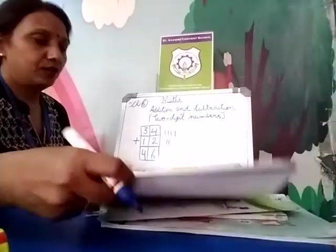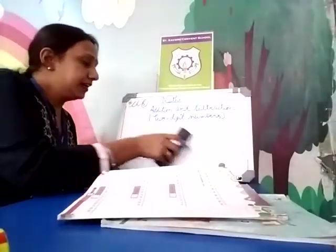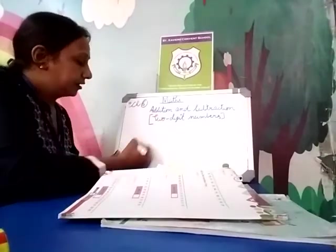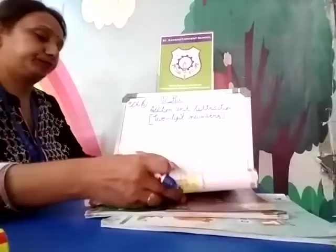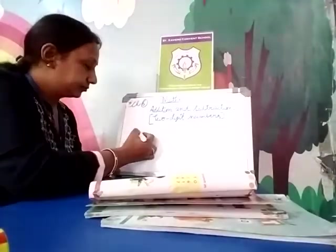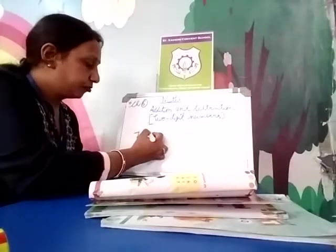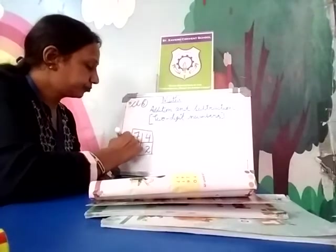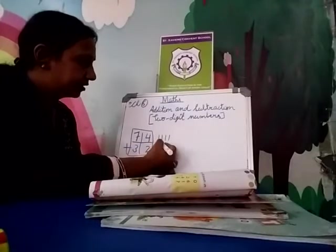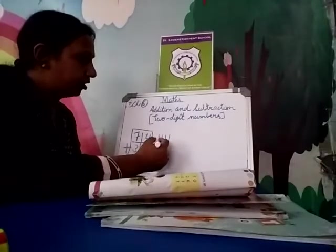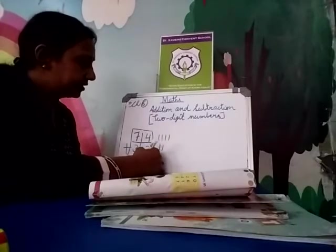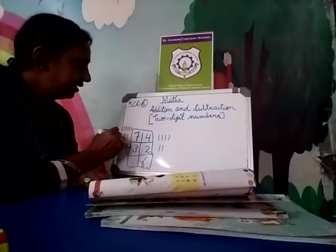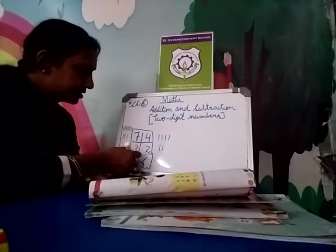Similarly, addition of 2 digits: like 74 and 23. Now add them. Draw lines and count: 1, 2, 3, 4, 5, 6 — this side will be 6. This side 7 plus 3: count 1 through 10 — so the answer is 10. This side what will come? 10.